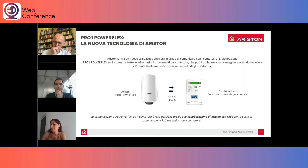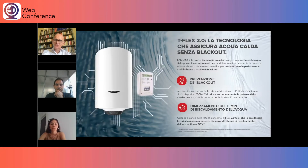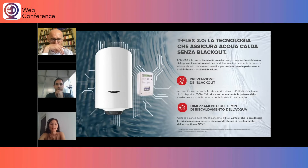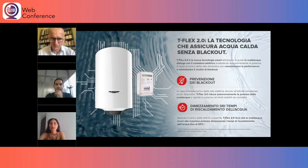Andiamo quindi nel vivo della presentazione vedendo quali sono le value proposition che il prodotto porta all'utente finale. Il prodotto è in grado di recepire le informazioni del contatore, quindi parliamo di potenza utilizzata in un certo momento nella casa, ma anche di potenza disponibile, sulla base del contratto che si ha, che è generalmente di 3,3 kilowatt. Le due value proposition principali sono la prevenzione del blackout e il dimezzamento dei tempi di riscaldamento.